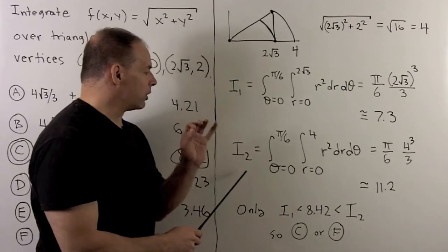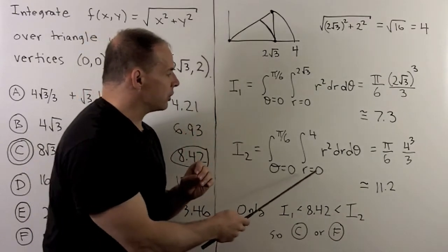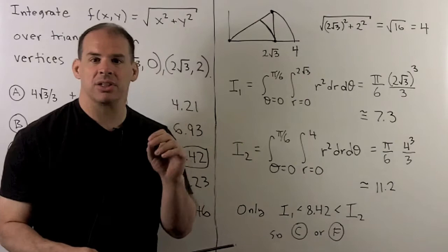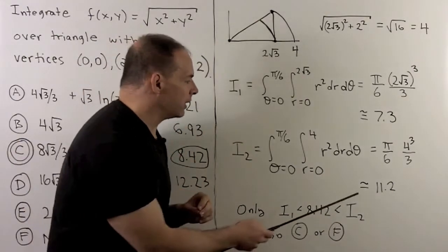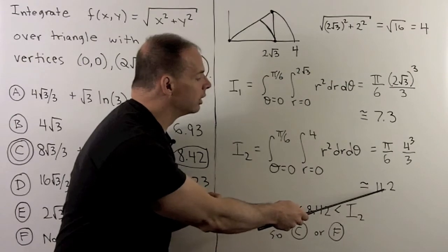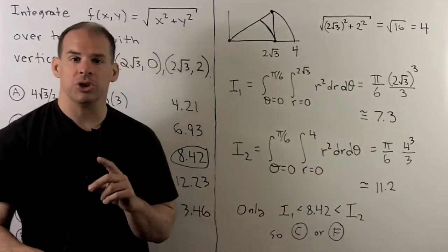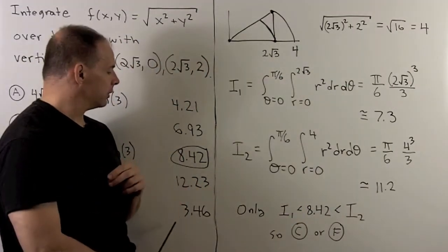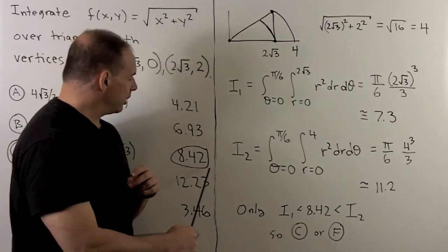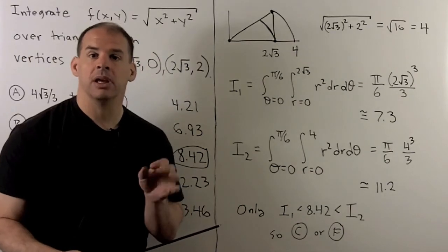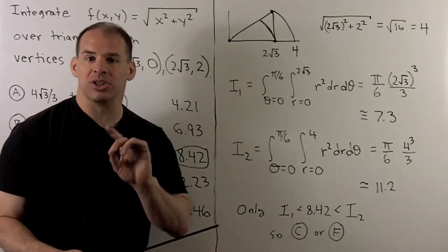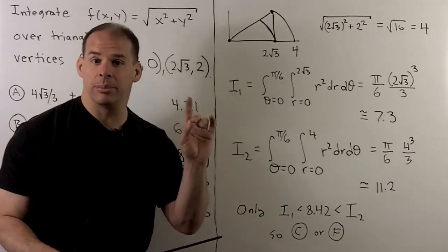For the integral over the larger wedge, r is going from zero to four. Work that out, I get π/6, four cubed divided by three. Put it into a calculator, and we get roughly 11.2. Now, when we check our answers, the only possibility that falls in our range is going to be 8.42 or C. So that narrows our answers down to either C or F, none of the above.